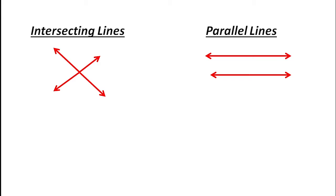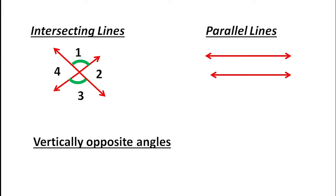Next is intersecting lines. That means two lines having a common point — that point is called the intersecting point of these two lines. When two lines are intersecting, we can find four angles.